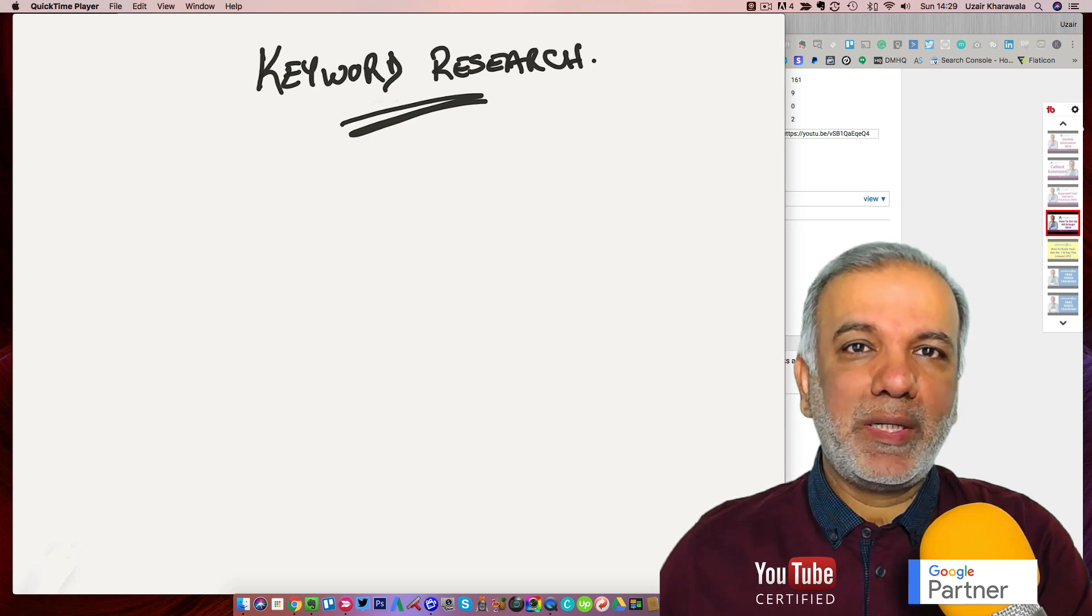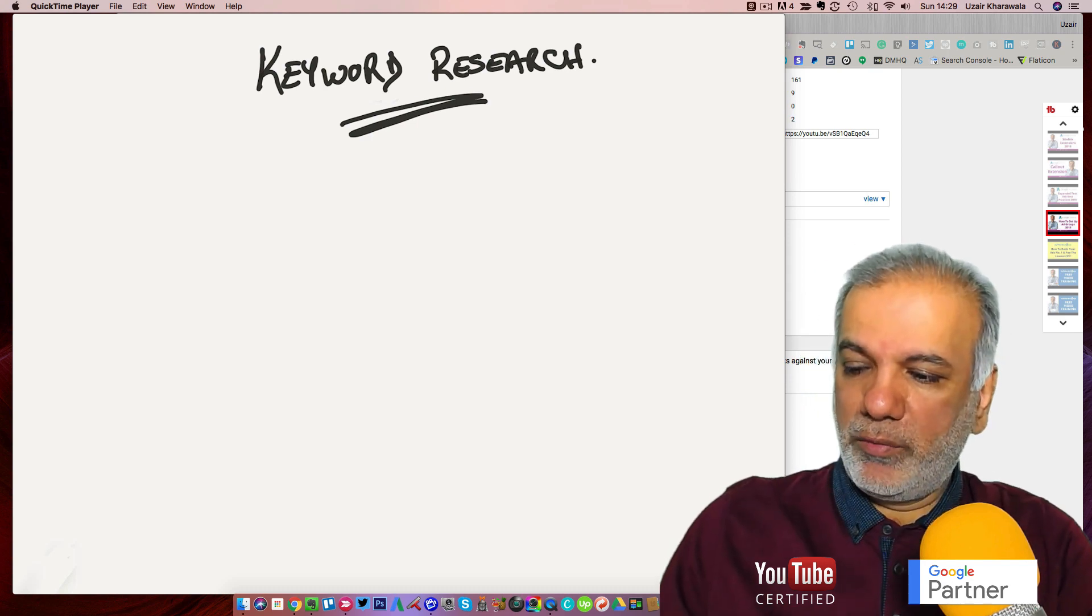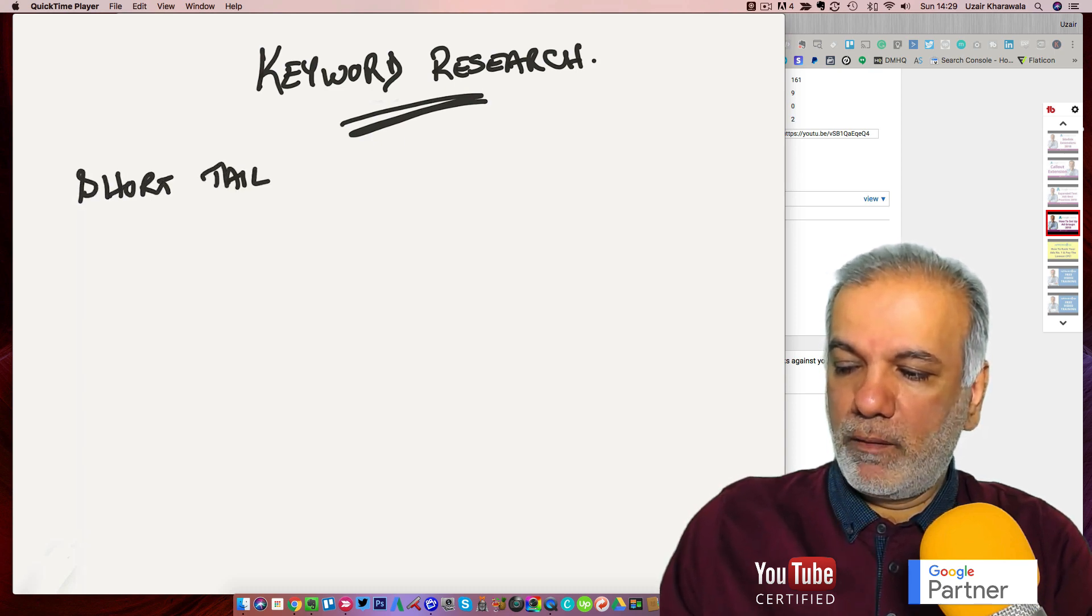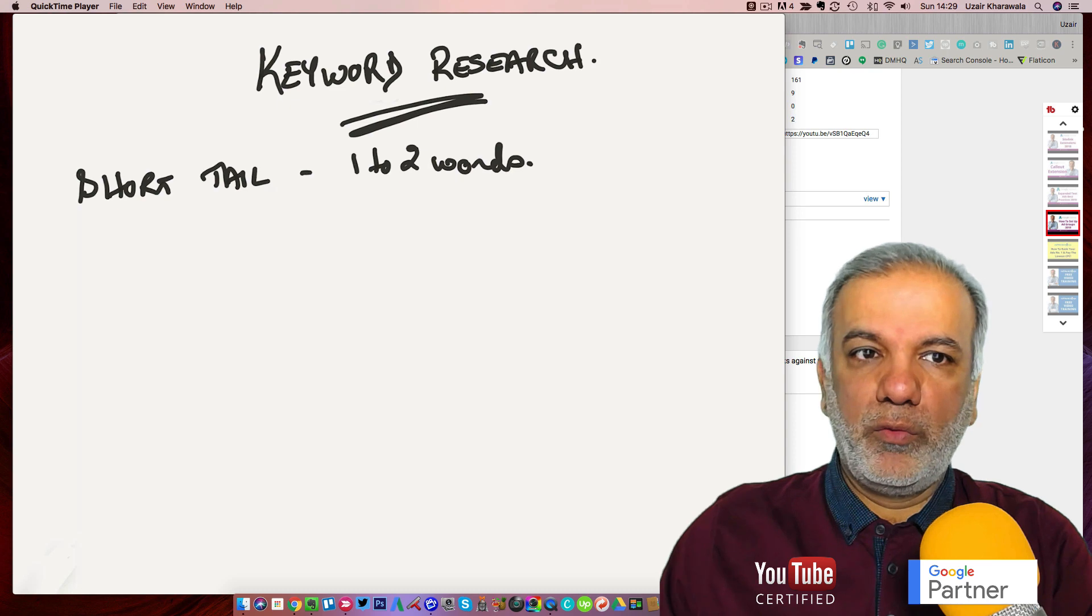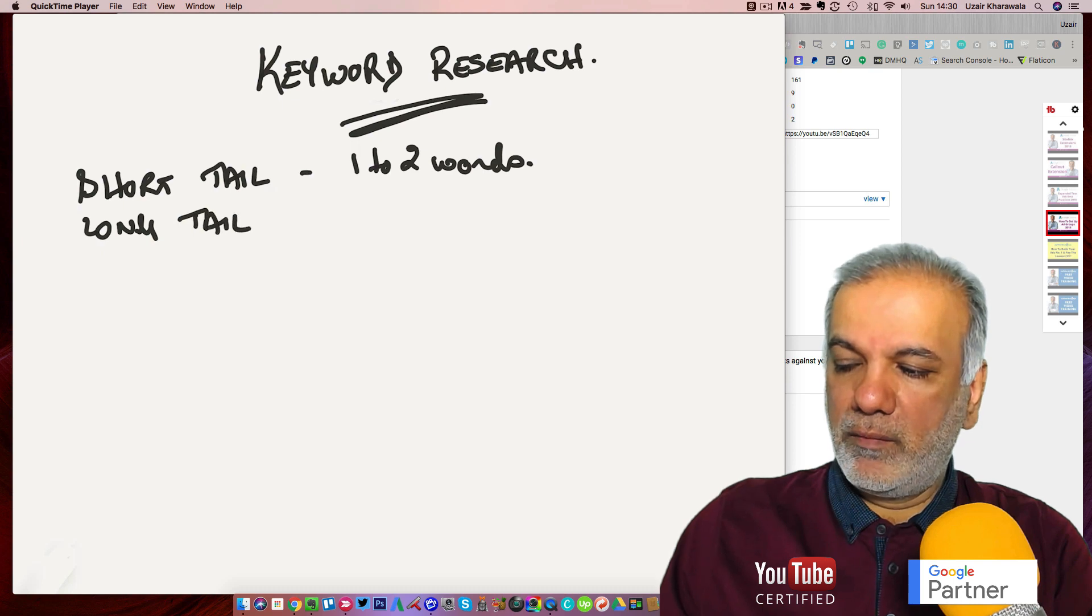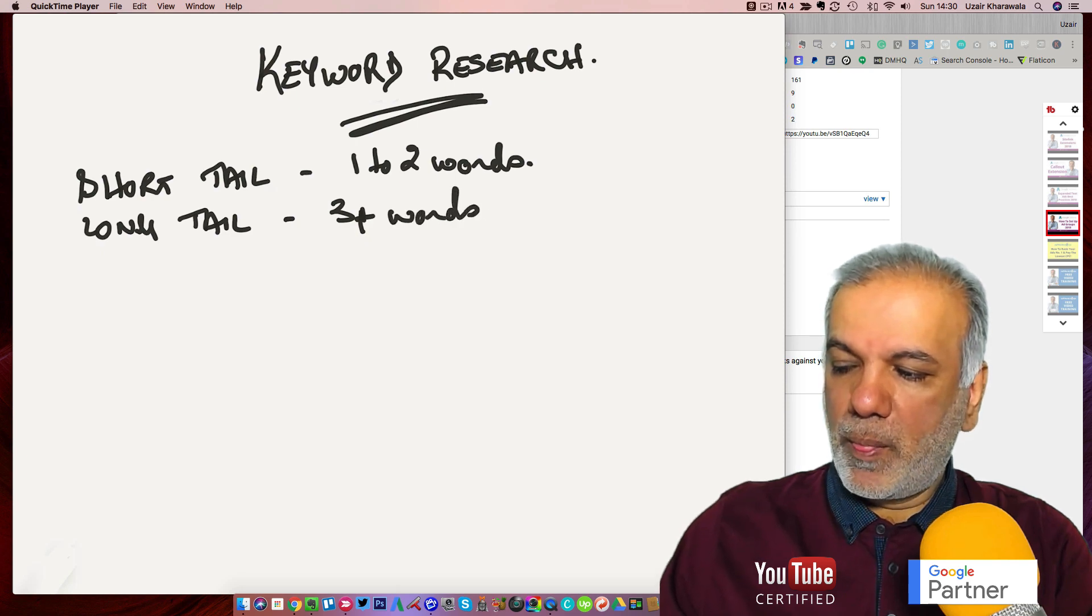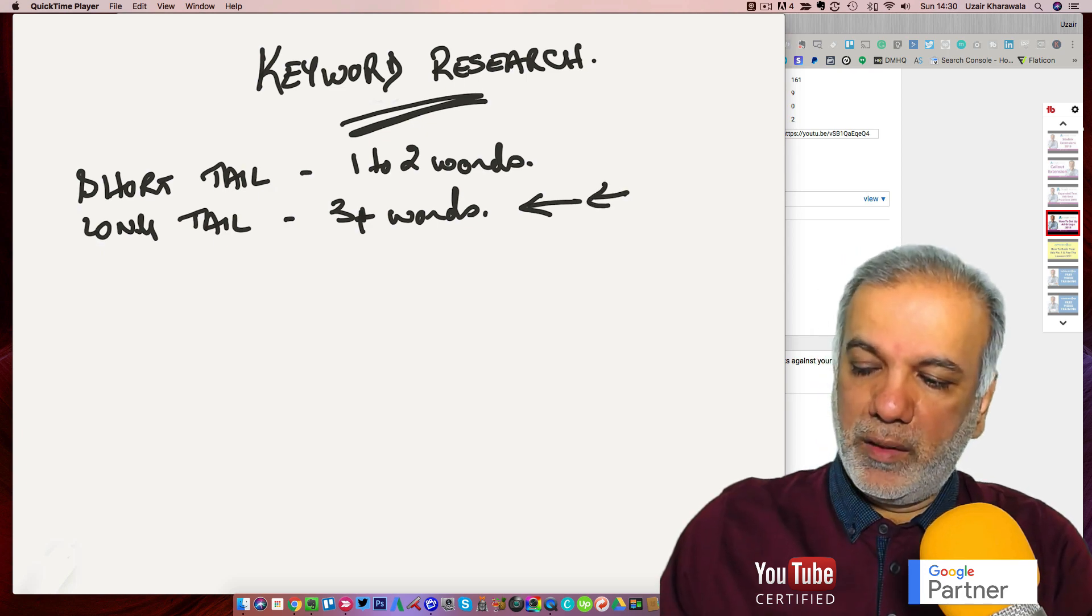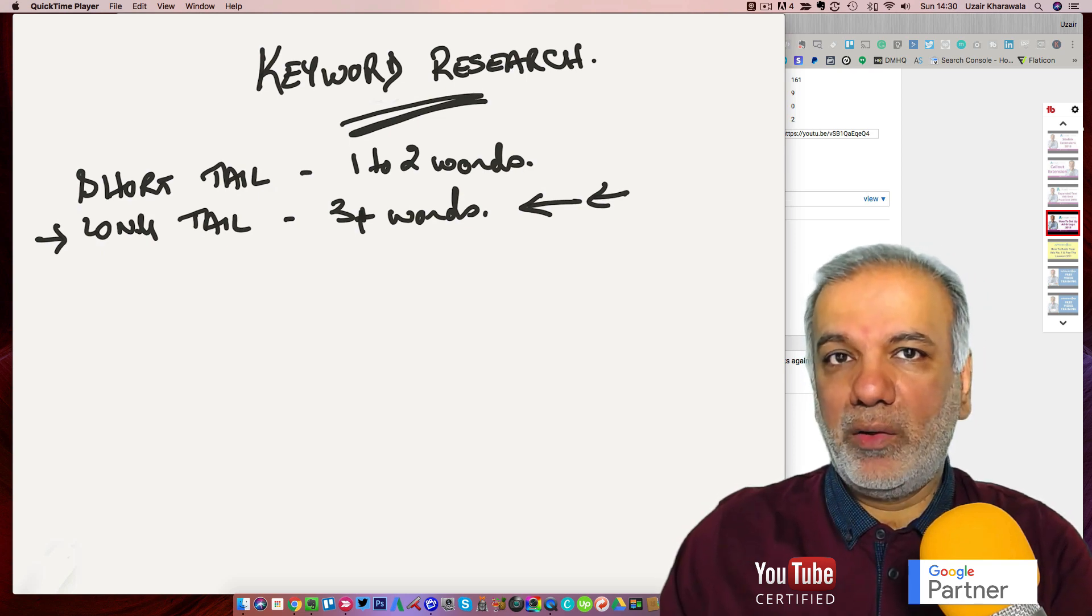Before you start researching, there are two types of keywords which you need to know. One is what we call a short tail, and these are usually between one to two words. And the other one is long tail, and these are anything from three plus words. And these are the keywords which you want to target, the long tail ones, because the short tail ones are too competitive although they may have a lot of search volume.